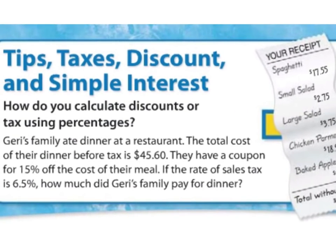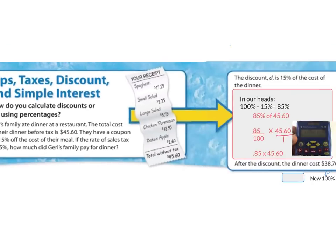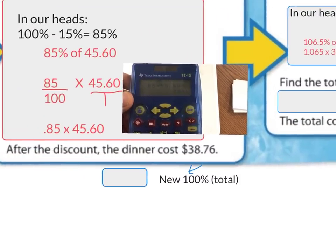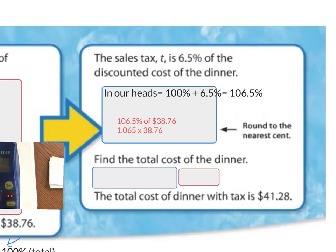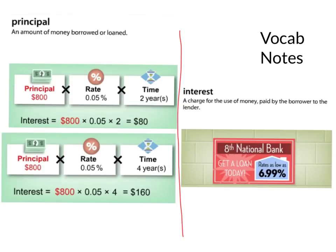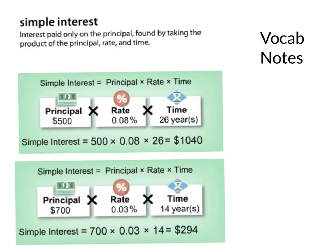Did we do all the steps? We found our new discounted total from $45.60, which was $38.76, then we paid 6.5% tax, and that's how much we paid. I'm glad we had a discount. There are vocab notes on the front table for you to tape or glue into your notes — one page talks about principal and interest, and there's also a simple interest page.